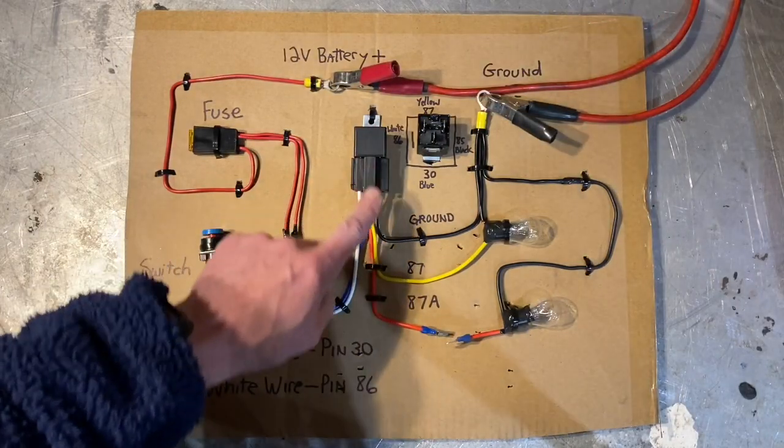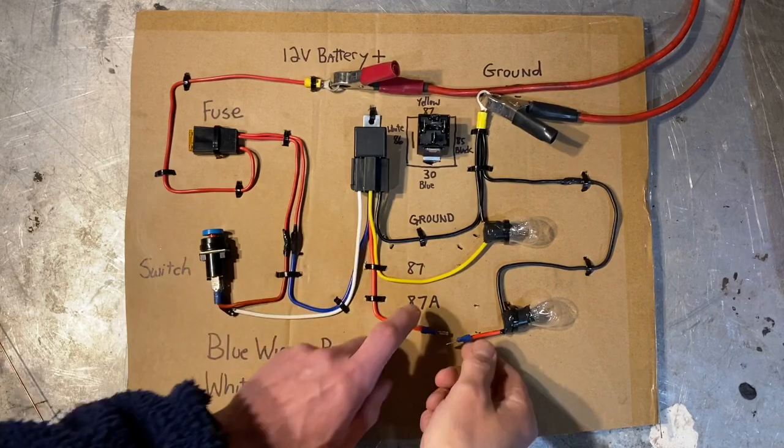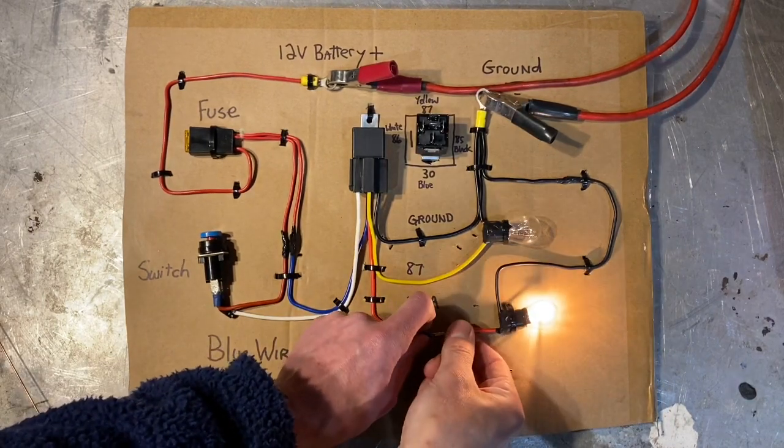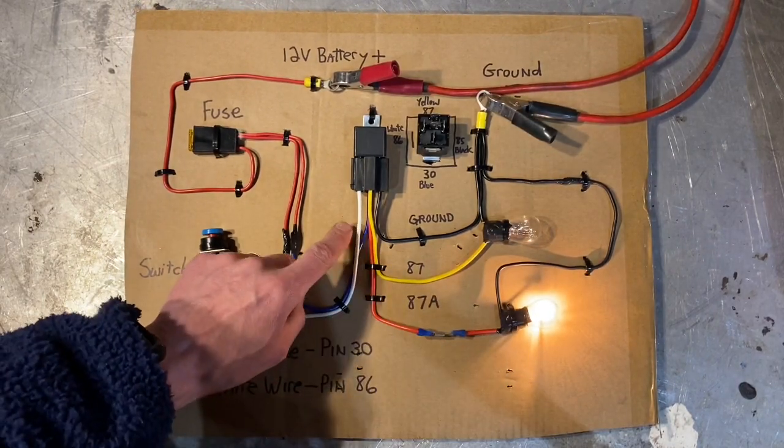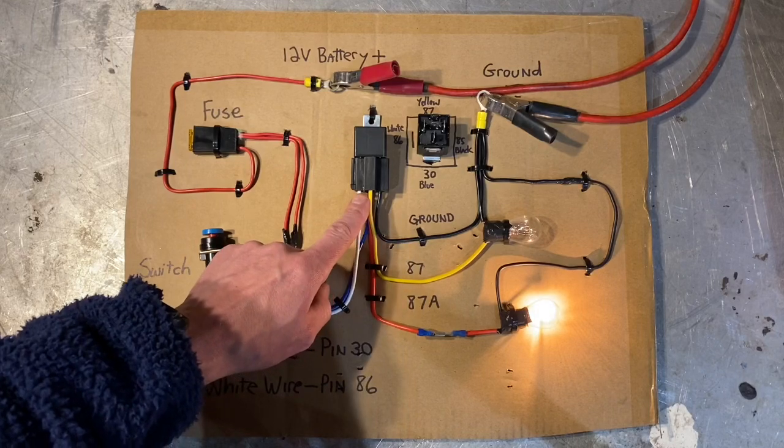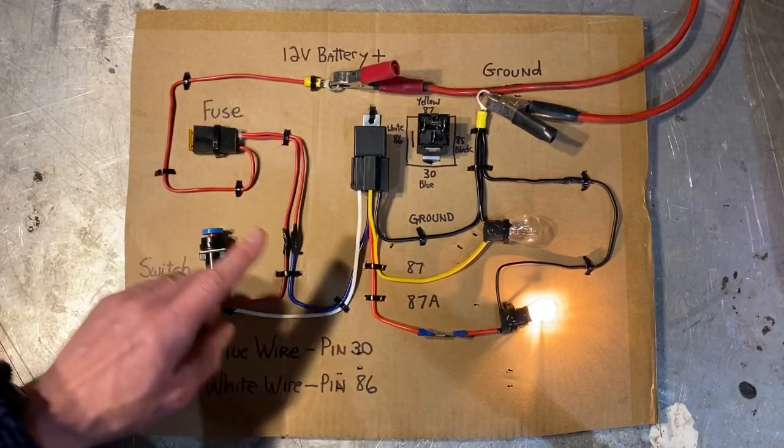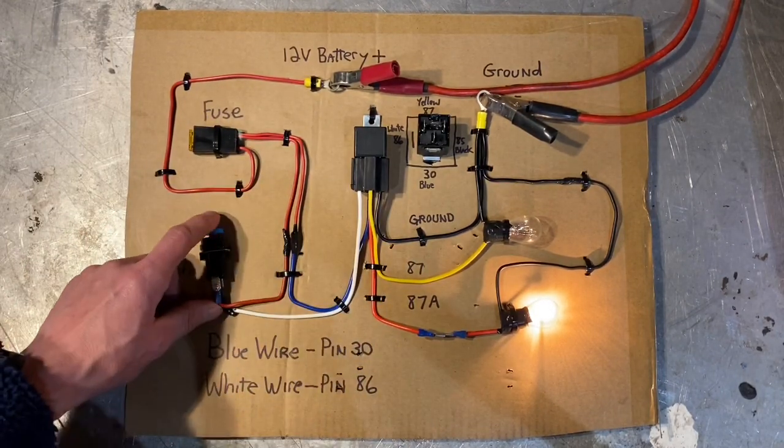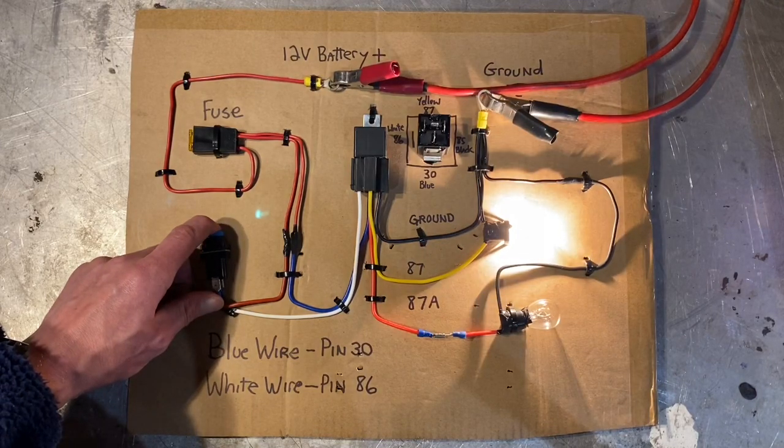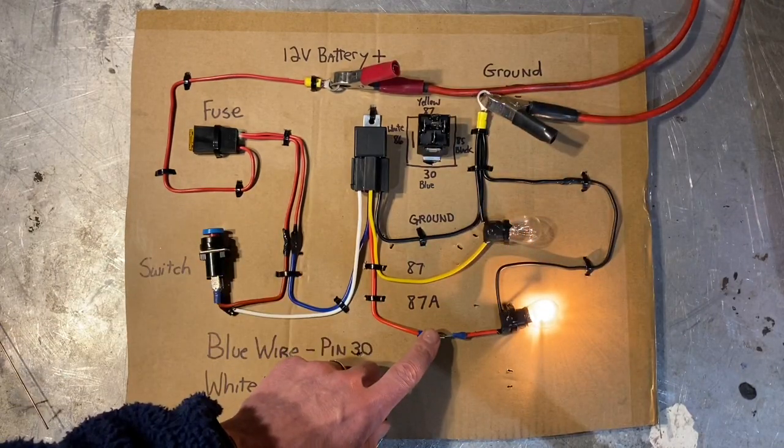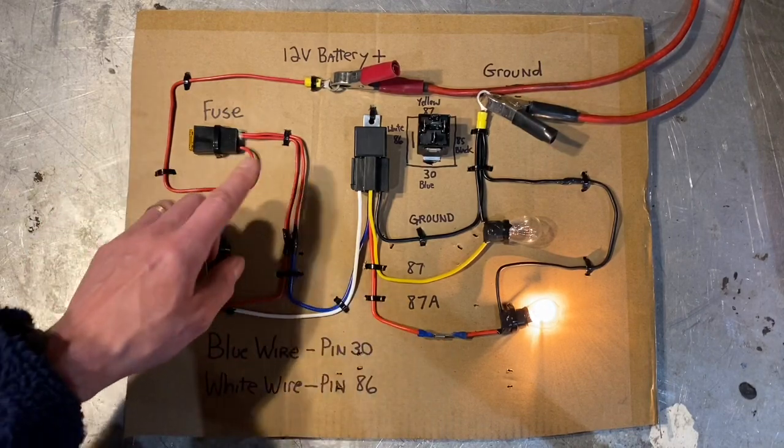Pin 87A is the last one, and it's right in the middle of the relay. The way that it works is it sends power from pin 30 to pin 87A at all times, except when you flick the switch. When you flick the switch, you'll see the other circuit is turned on, and pin 87A no longer has power. So that's how it works.